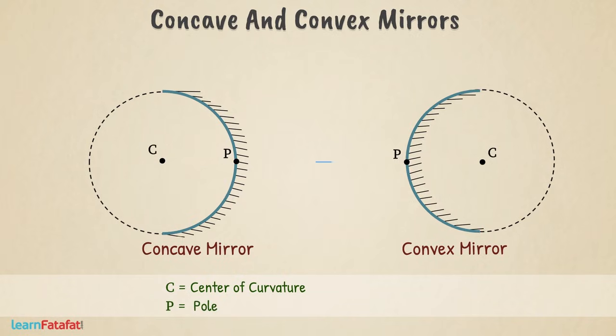An imaginary line passing through the centre of curvature and the pole of the mirror is called the principal axis.